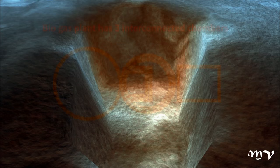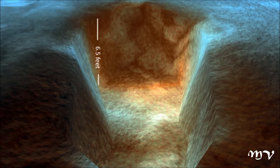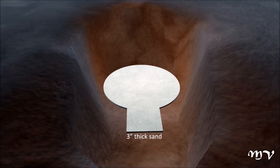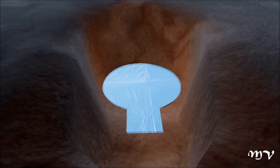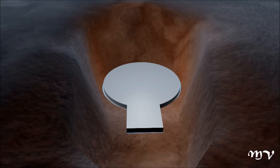First, the site has to be excavated with a measurement of 6.5 feet depth and a diameter of 8.5 feet. A layer of sand of three inches thickness has to be added, then a polythene sheet has to be spread over the sand, and a three-inch thick brick soiling has to be prepared over the sheet. A layer of four inches of reinforced concrete cement (RCC) has to be poured over the brick soiling to ensure chamber stability.